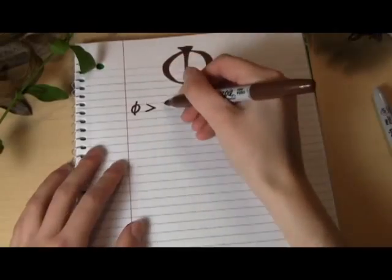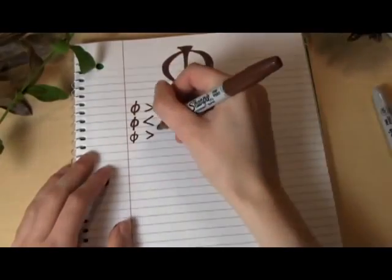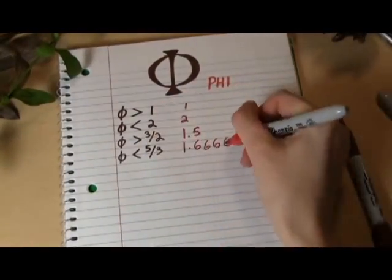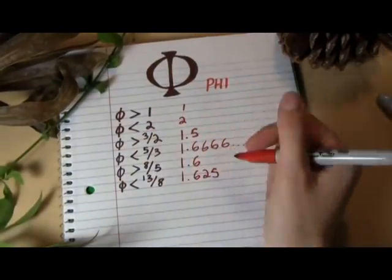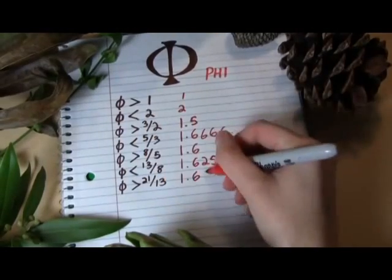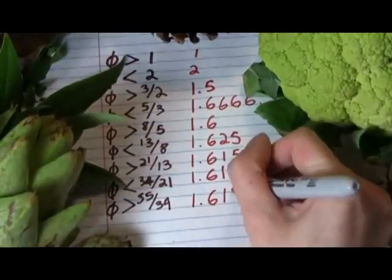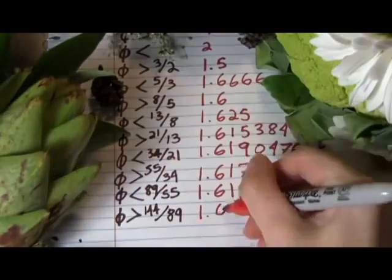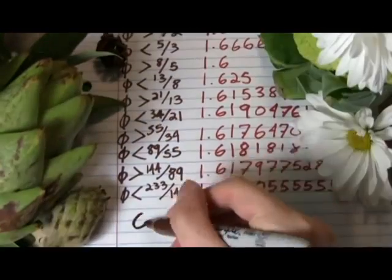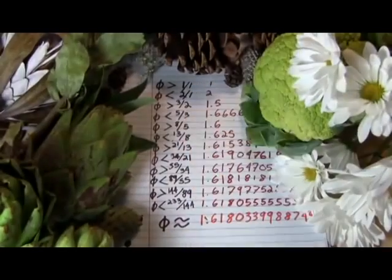It's more than 1, but less than 2. More than 3 over 2, less than 5 over 3. Greater than 8 over 5, but 13 over 8 is too big. 21 over 13 is just a little too small, and 34 over 21 is even closer, but too big, and so on. Each pair of adjacent Fibonacci numbers creates a ratio that gets closer and closer to phi as the numbers increase.